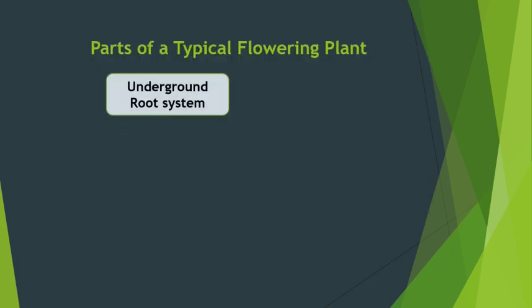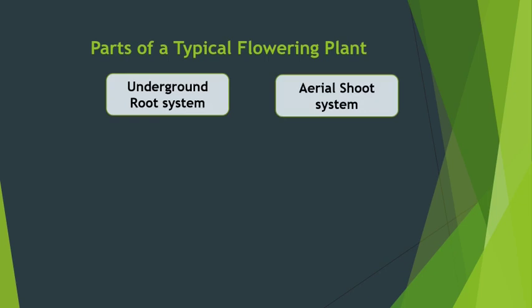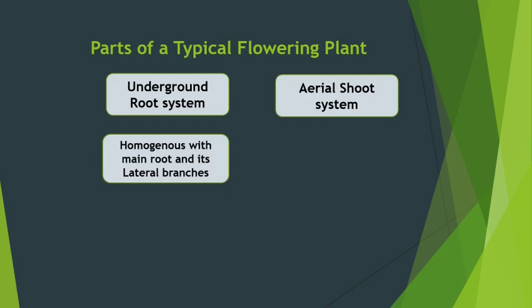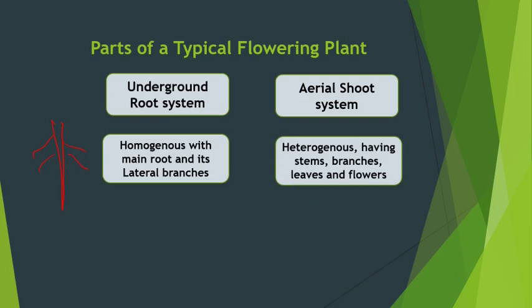Let us see the parts of a typical flowering plant. The underground part is called as the root system, whereas the aerial part is called as the shoot system. The underground root part is homogenous — all parts are similar; it has a main root and this main root gives out branches. The aerial part is heterogeneous — it gives out branches, leaves, produces flowers, fruits, etc.